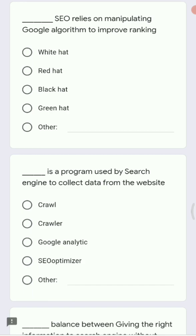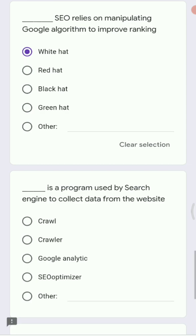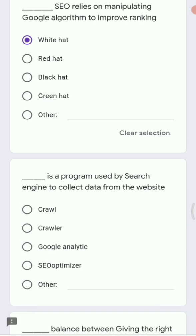Next: dash SEO relies on manipulating Google's algorithm to improve ranking. Options are white hat, red hat, black hat, and green hat. Red hat and green hat do not exist in SEO — only black hat and white hat exist. The right answer here is black hat SEO.